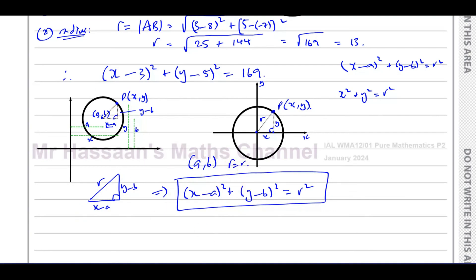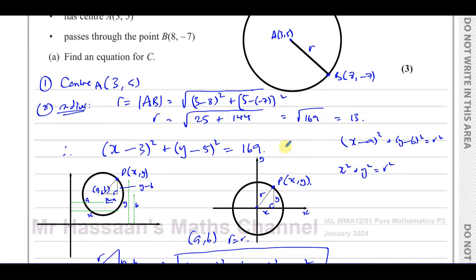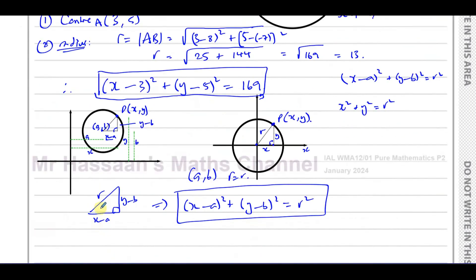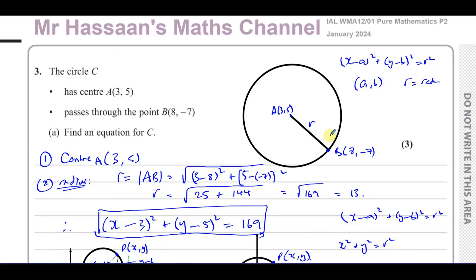All right, for those of you who might have been wondering where the equation comes from — that's where it comes from. The answer to the main question was (x-3)² + (y-5)² = 169 and y = 14 for part B. Other questions from this paper and on equations of circles can be found in the linked playlists. Subscribe to my channel, and thank you for watching — see you soon.